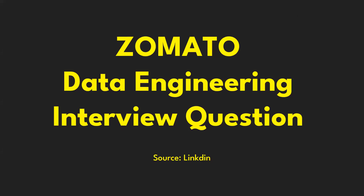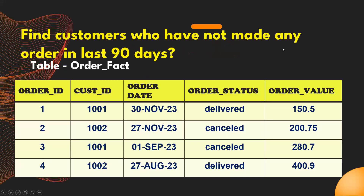Hello friends, welcome to SR Technologies. Today we are going to discuss another SQL interview question which is asked in Jometer company for a data engineering position. The question is: find the customers who have not made any order in the last 90 days. We have an order fact table with five columns: order ID, customer ID, order date, order status, and order value.